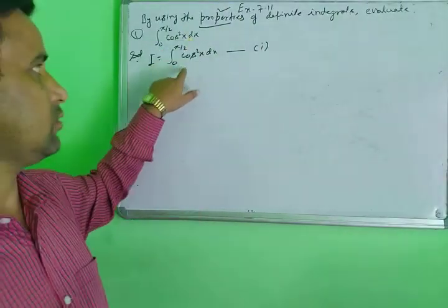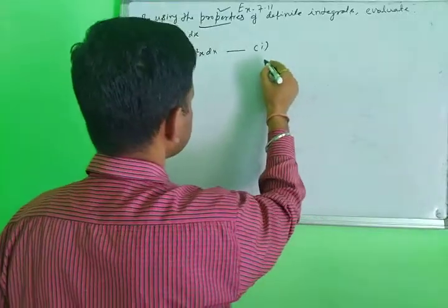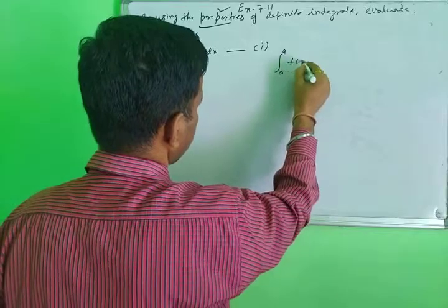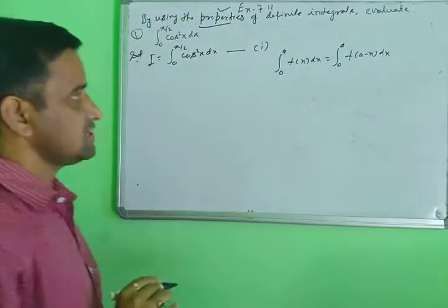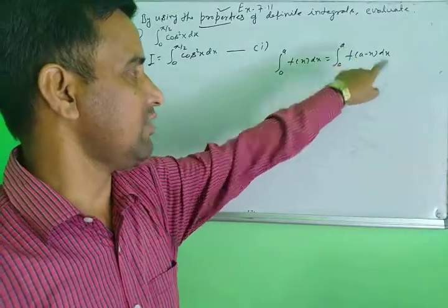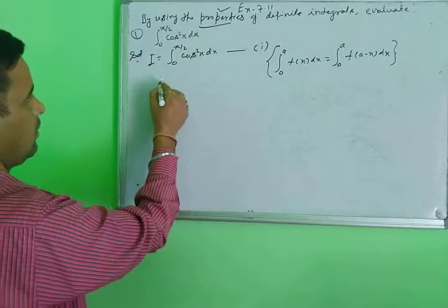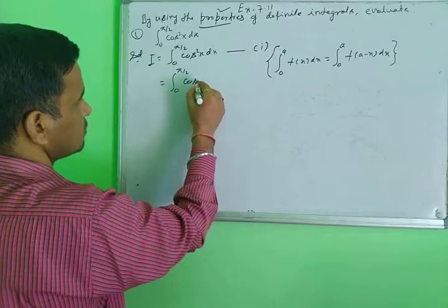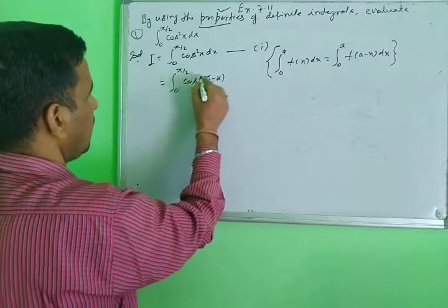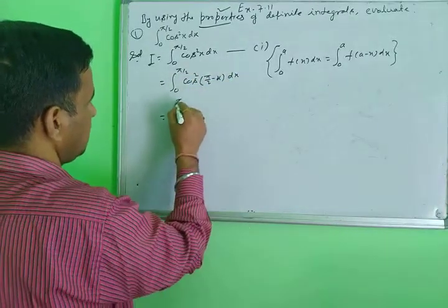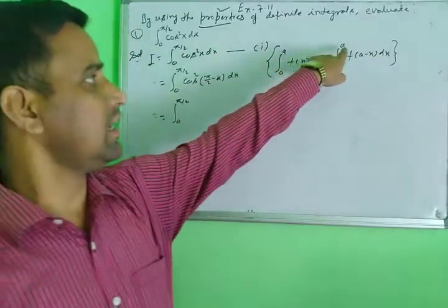First, write the equation: let I equal the integral from 0 to π/2 of cos²x dx — this is equation 1. Now apply the property: the integral from 0 to a of f(x) dx equals the integral from 0 to a of f(a minus x) dx. Here, a is the upper limit π/2, so we substitute x with π/2 minus x.